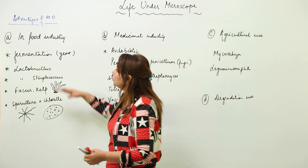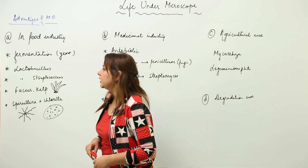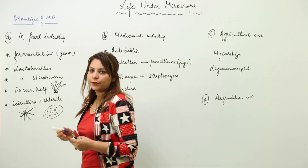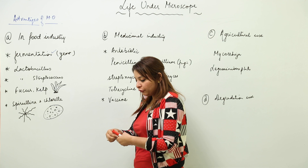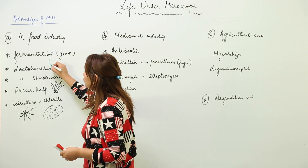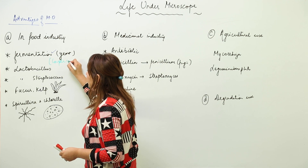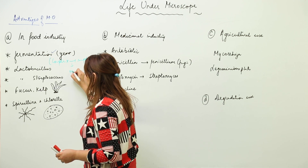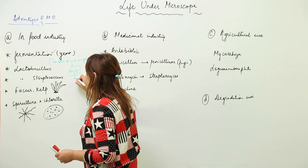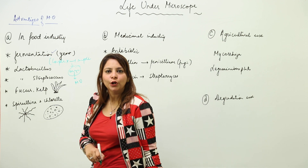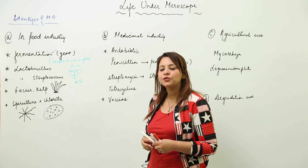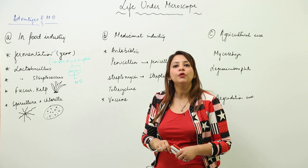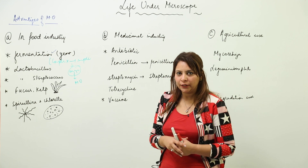First, they are used in food industries, specifically in the process of fermentation. Fermentation is a process in which a complex substance breaks up into simpler substances, and this happens due to enzymes secreted by microorganisms. So microorganisms carry out fermentation by releasing enzymes that break complex substances into simple ones.